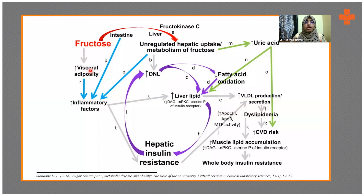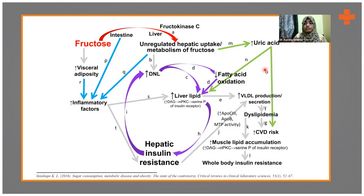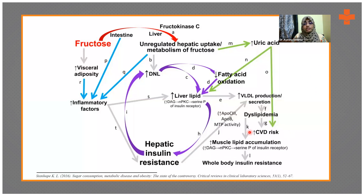First, fructose increases visceral adiposity and hence leads to weight gain. It also causes unregulated hepatic uptake through fructose metabolism, which increases de novo lipogenesis and leads to increased lipid levels in the liver, causes insulin resistance, increases VLDL production, and also leads to increased uric acid. Most people on a low uric acid diet also need to cut down on fructose because it indirectly increases uric acid in the body. There is also increased cardiovascular disease risk with high fructose consumption.